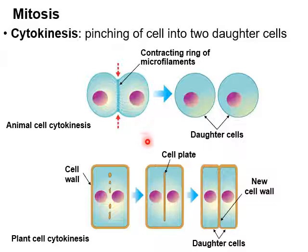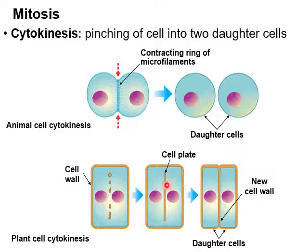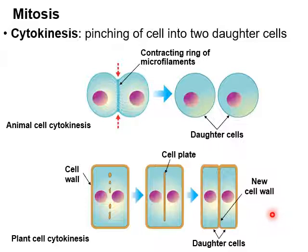In plant cells, a new cell wall forms in the middle. We start building a cell wall between the two sides, and eventually that wall is completely built and the two cells are separated from each other — like being in a room and putting up a permanent divider, creating two different rooms by building a wall between them.